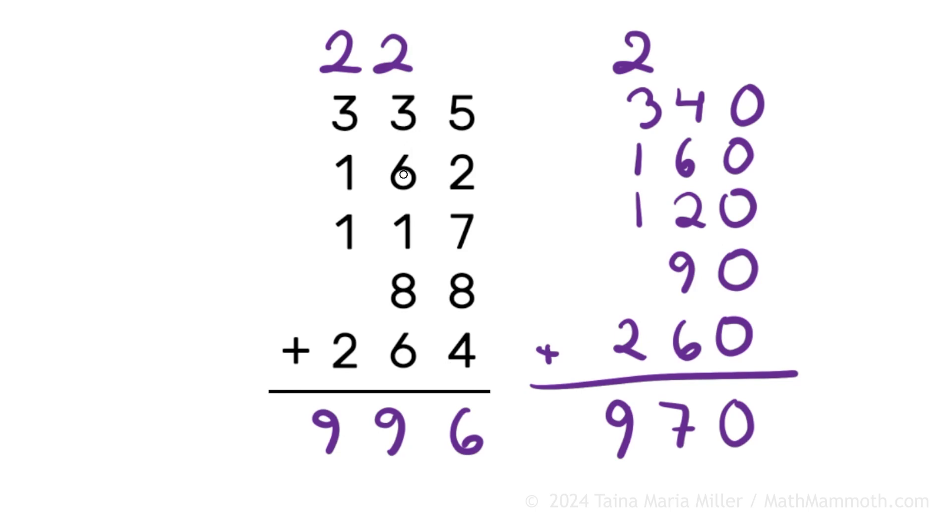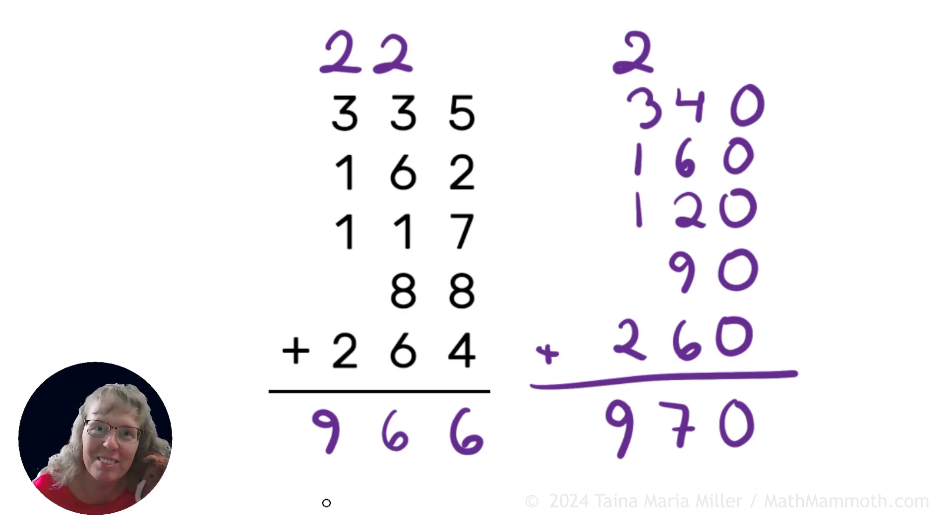And then we have 5 plus 6, 11, 12, 20, 26. Uh-oh. So this should be just 6, right? And then 26, 5, 6, 7, 9. All right, now look, 966 and 970. Those are very close, so our estimate helped to discover an error that was made. But now it should be correct. Now you could still check by adding in different order.